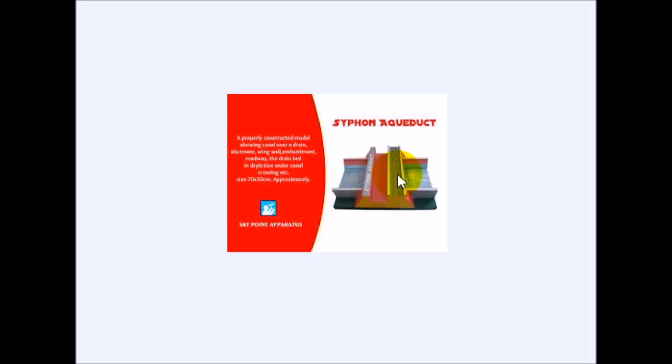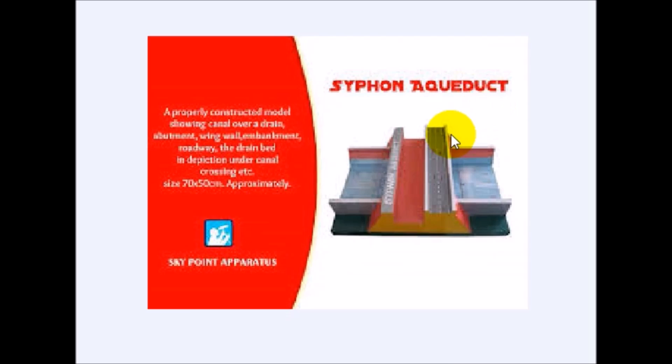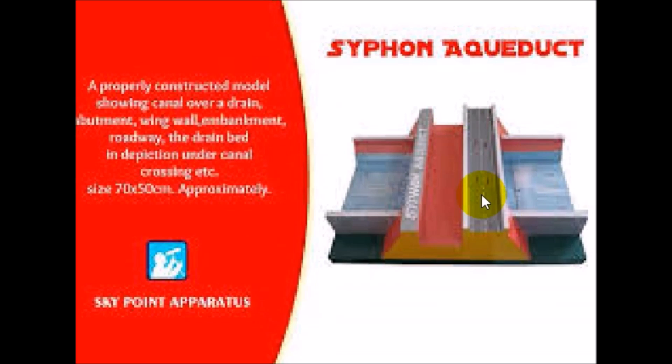In this figure you can see a siphon aqueduct — this is the canal, this is the road, and this is the natural drainage.